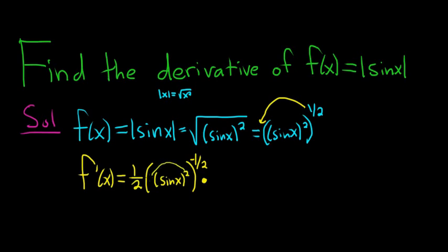So you have to use the chain rule again. So bring the 2 down. We get sine x to the first power times the derivative of the inside. Well, the inside function is sine and its derivative is cosine.